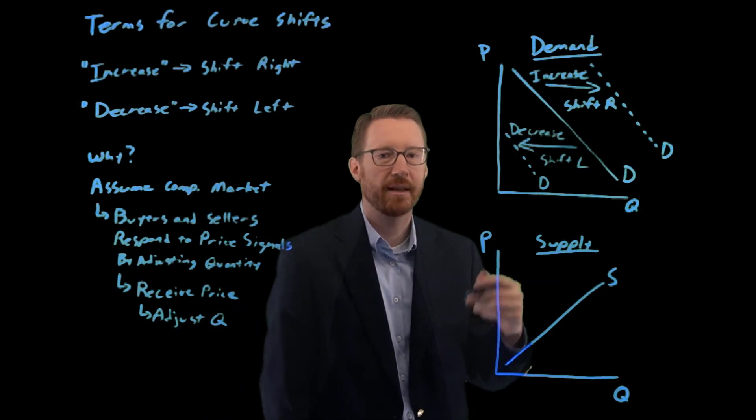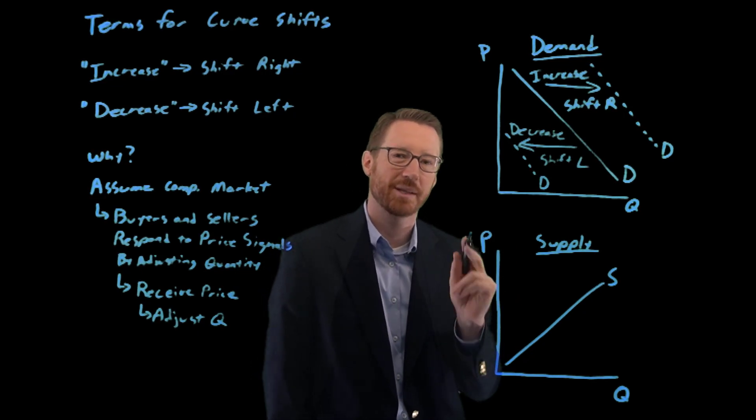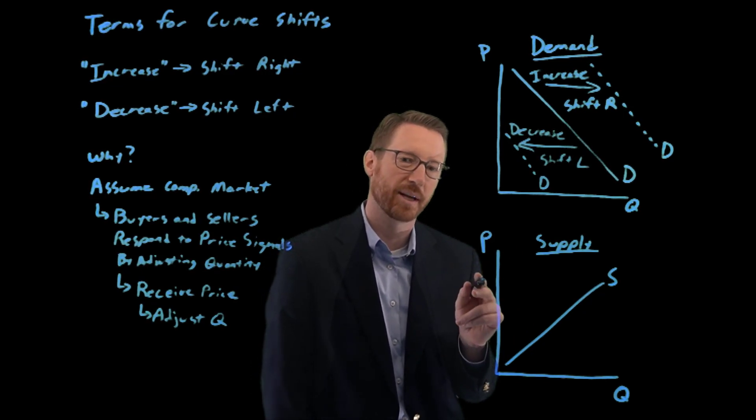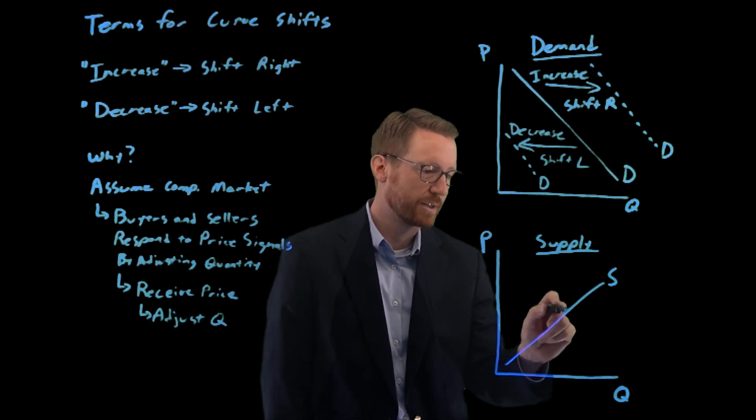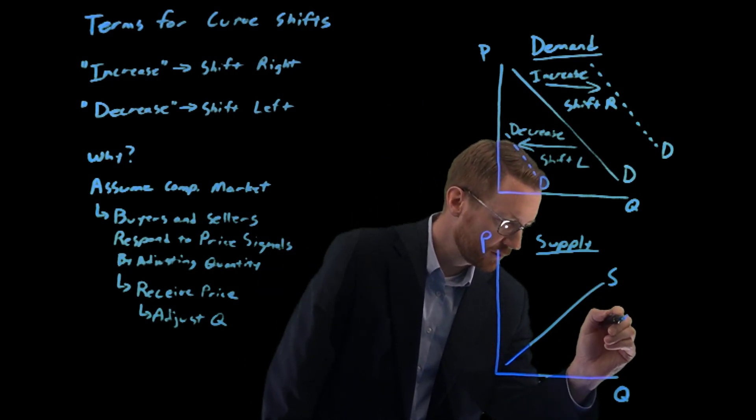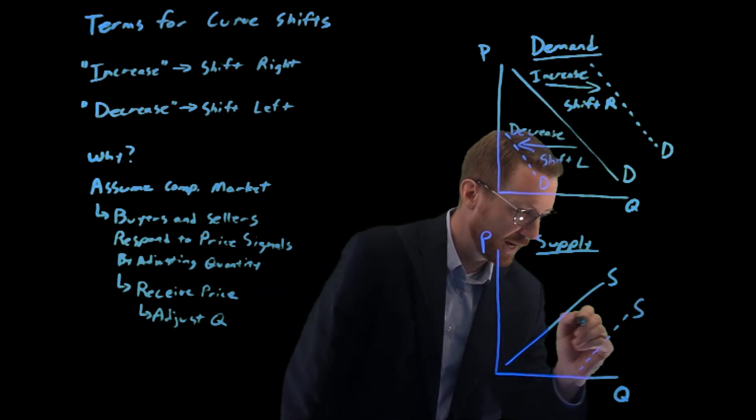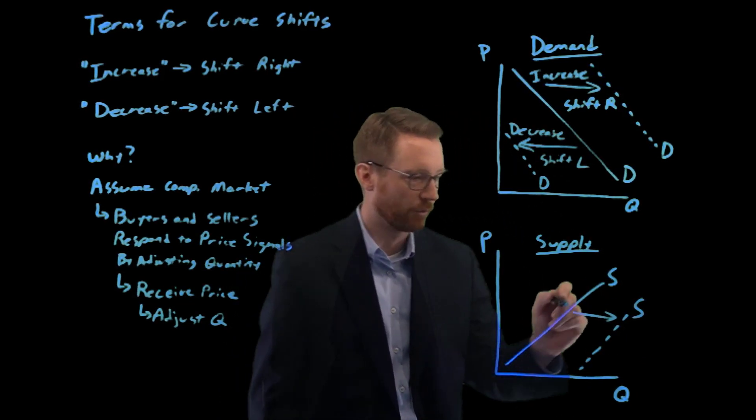For supply, similar story. An increase in supply means that at every price, sellers are willing and able to sell more. So at each price, they're willing to sell more. An increase in supply is this curve shifting to the right.